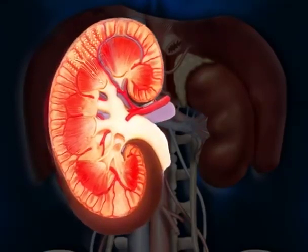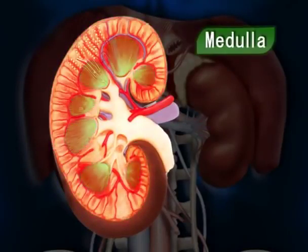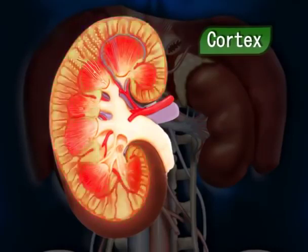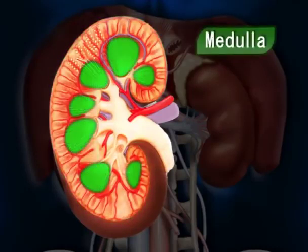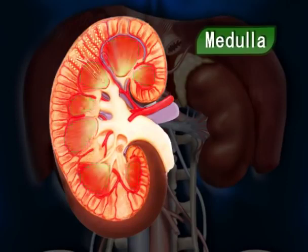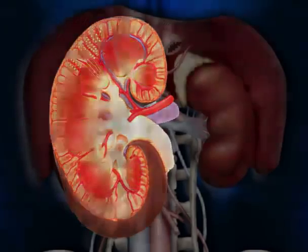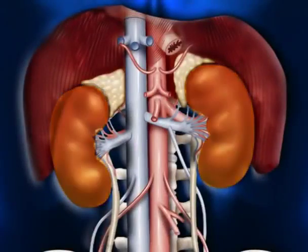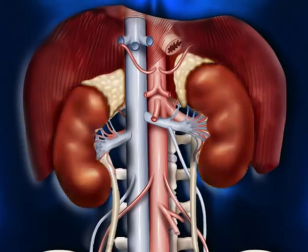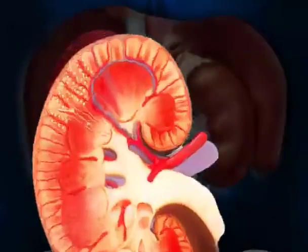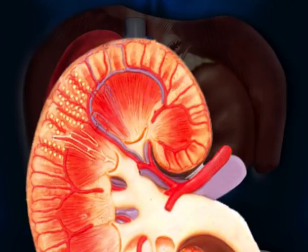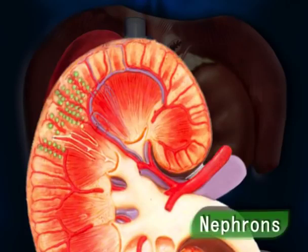A fibrous capsule surrounds the kidney. Inside the kidney there are two zones: the cortex and the medulla. The cortex is a reddish-brown layer of tissue below the capsule, whereas the medulla is a pale conical-shaped striation. The main function of the kidneys is to remove waste products and excess water from the blood. The kidney does this with the help of tiny filters called nephrons.